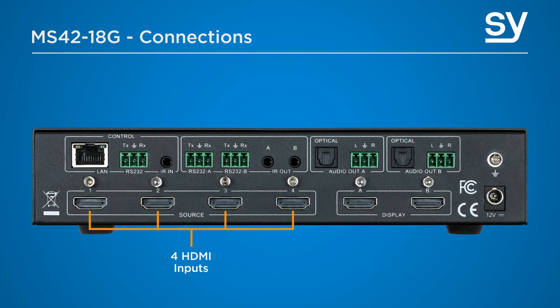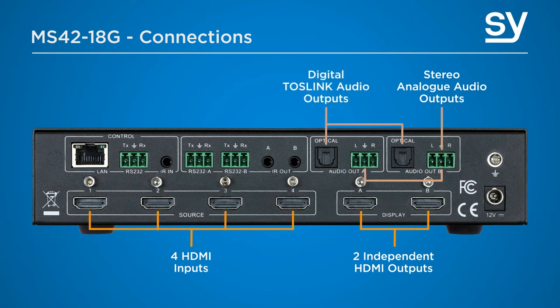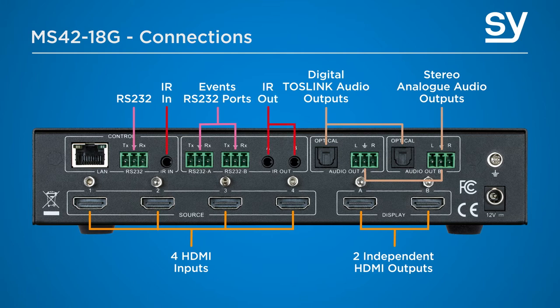Now let's talk about the connectivity. It has four 18 gig HDMI inputs, two independent downscaling 18 gig HDMI outputs, and each HDMI output also has associated with it two audio outputs — firstly a stereo analog output and a digital TOS link optical output. For control we have an RS-232 connection via Phoenix connectors, two further RS-232 connections for events control, an IR control input with two IR outputs via 3.5mm TRS jacks, an RJ-45 LAN port, and a DC power input with captive screw locking connector.